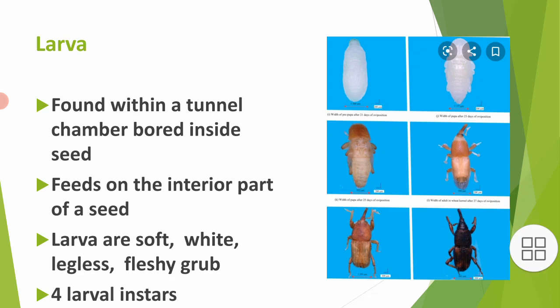The larva is found within a tunnel or chamber bored inside a seed. The egg hatches into a larva — a soft, white, legless, fleshy grub. The larva feeds on the anterior part of the seed, as the larval stage is the primary feeding stage. Sitophilus zeamais larvae have four larval instars.